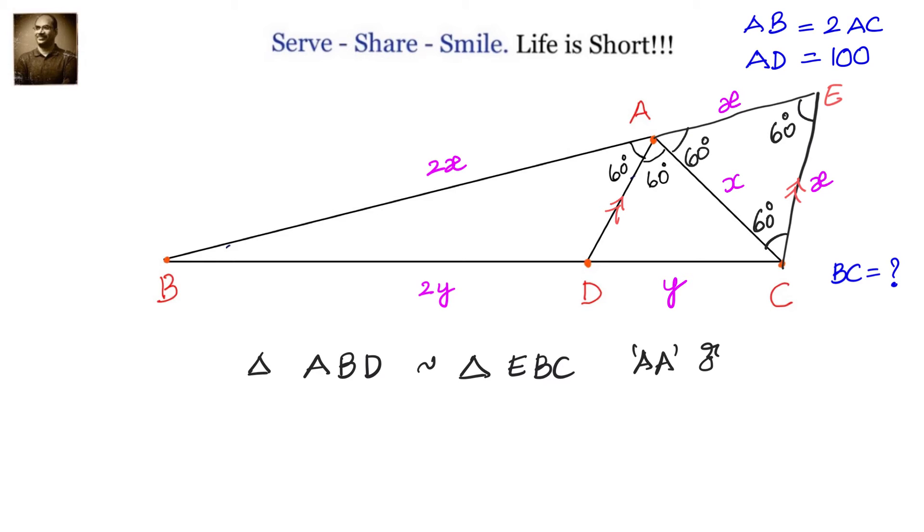SAS because we have 2x by 2y equals 3x by 3y and angle B is common. So we can see that these 2 triangles are similar to each other.